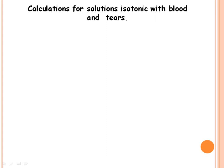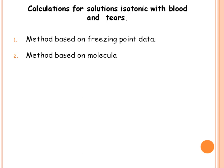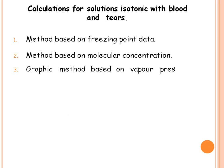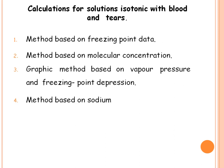Now we will see methods for determination of tonicity. The first method is based on freezing point data. The second method is based on molecular concentration. The third method is the graphic method based on vapor pressure and freezing point depression. The fourth method is the sodium chloride equivalent method. These methods are used to determine tonicity of a solution.